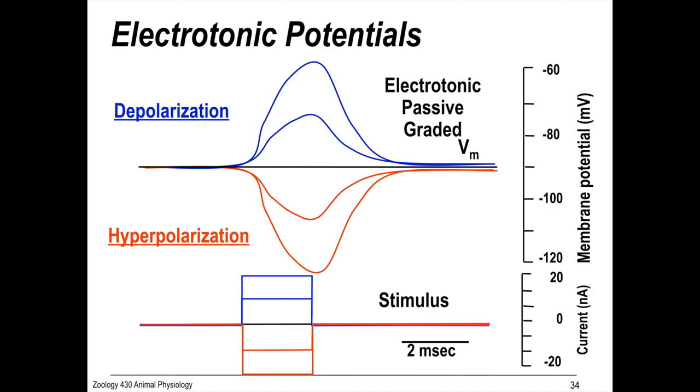So the larger the stimulus, the larger the electrotonic potential or graded potential. But it also means that the potential decays with time and distance. It's not self-perpetuating like an action potential.